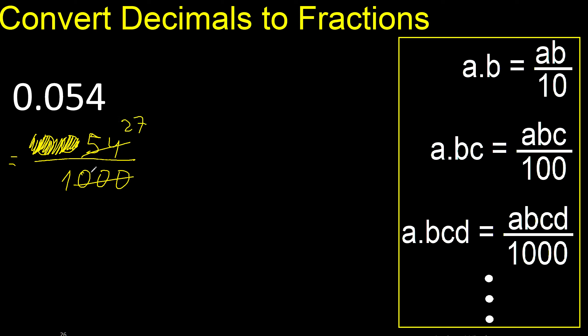27 divided by 2 gives 500. Finish, because it cannot be divided by the same number. Finish.